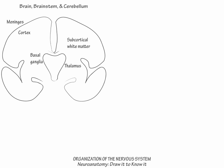Label the hypothalamus, which lies along the third ventricle and serves as the center for autonomic nervous system function, and the cerebrospinal fluid system, which assists the meninges in supporting and nourishing the nervous system.